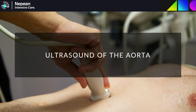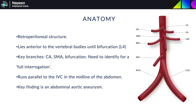It's imaged using the low-frequency curvilinear probe, though the phased array or microconvex can also be used. The abdominal aorta is a retroperitoneal structure, originating as a continuation of the descending thoracic aorta at the diaphragm and running parallel to the IVC. It lies anterior to the vertebral bodies until its bifurcation into the common iliacs at around L4. The key branches seen with ultrasound are the coeliac axis, SMA and the bifurcation, and a POCUS study should be able to follow the entire course and recognise these landmarks.